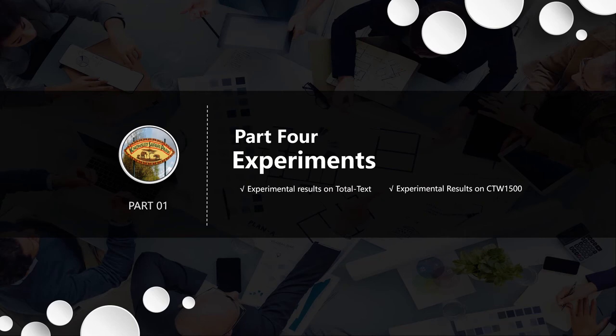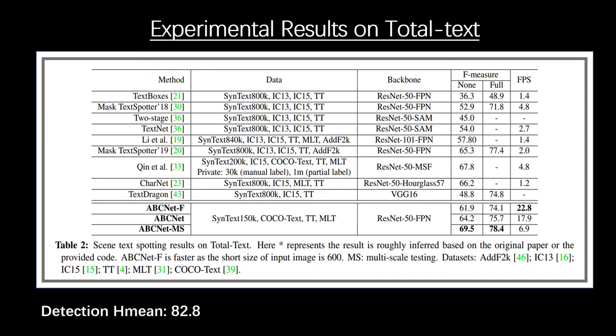Next, we will introduce the experimental results of our method. This is the result of our method on the total text. It can be seen that our method achieved the best results, and the speed is much faster than the previous methods.